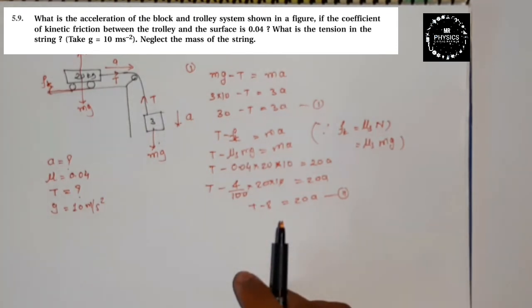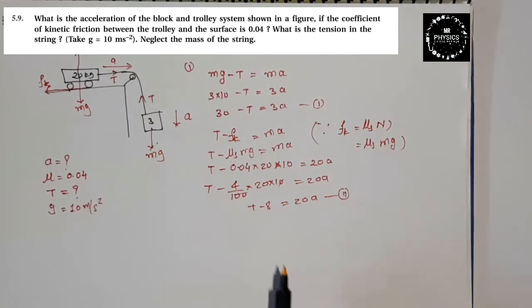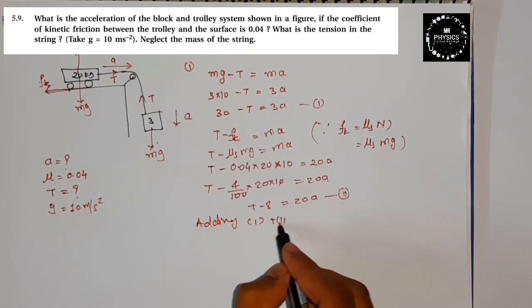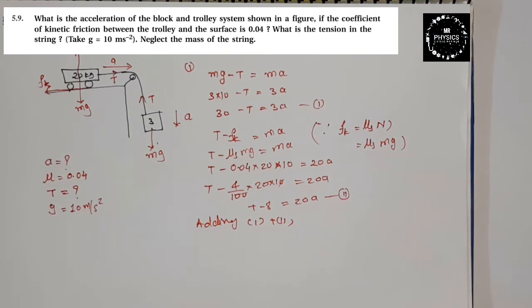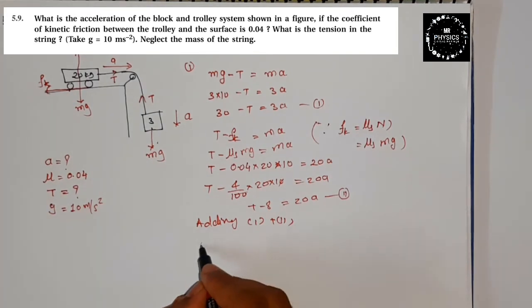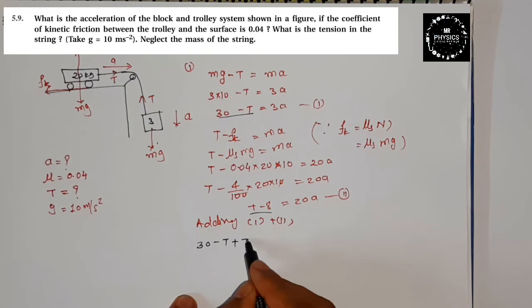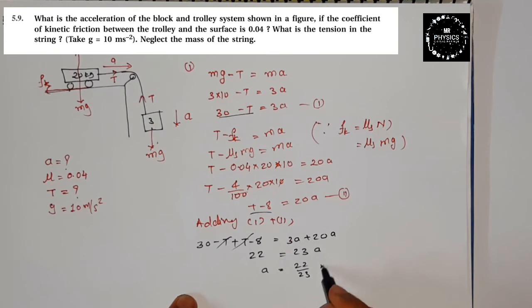Now this is equation 2. In dono ko add karna hai. Adding, yaha par 30 plus T minus 8 is equal to yaha par 3a plus 20a. T will be cancelled out. 30 minus 8 which is 22 aur yeh 23a. To acceleration is equal to 22 by 23 meter per second square.